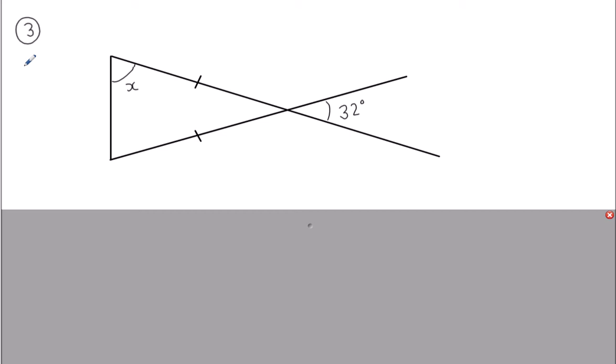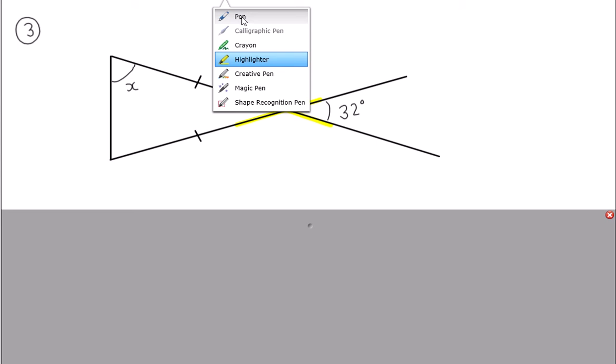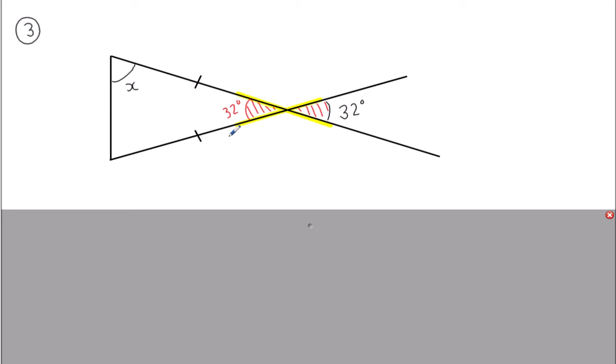Number three uses the opposite angles rule I gave you at the start of this video — angles opposite each other are equal when two straight lines cross. I've got two straight lines crossing making a letter X, so if this angle is 32 degrees, the one on the other side is also 32 degrees. Now, what type of triangle is it on the left-hand side? It's got dashes on it, so it's isosceles. Isosceles triangles are symmetrical — they're the same on both sides, which means not only is the top angle X, so is the bottom one, and these two base angles are equal.